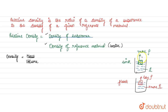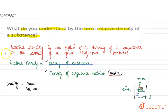So in the first case, the relative density is more, so the substance sinks. In the second case, the relative density is less, so it floats. Hence, relative density is given by the density of the substance divided by the density of the reference material, which is water.